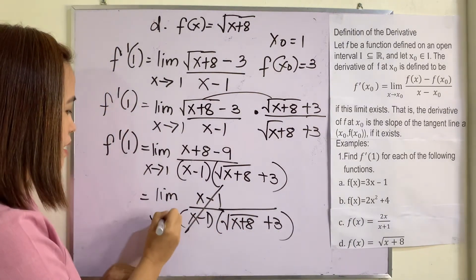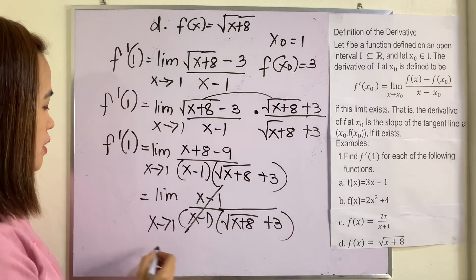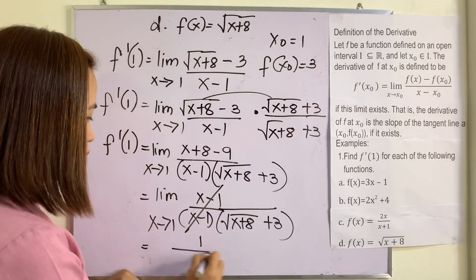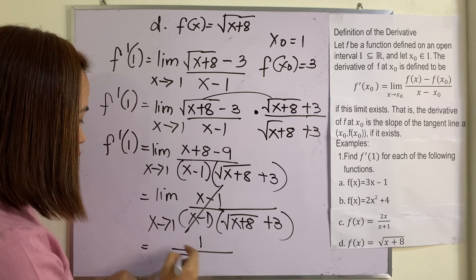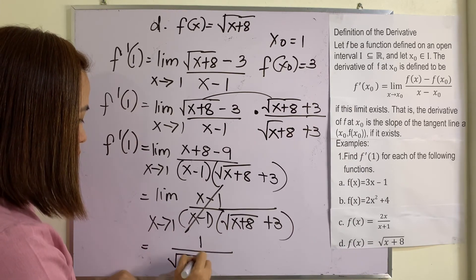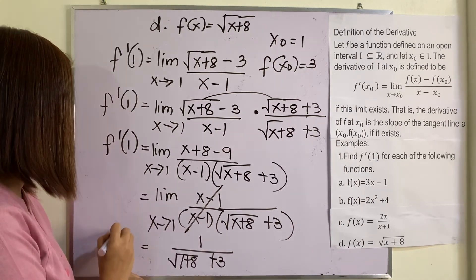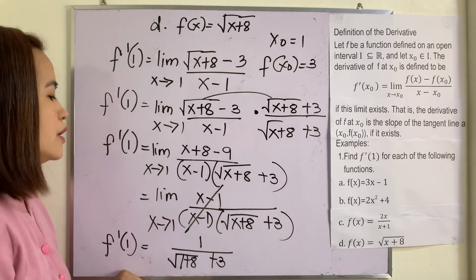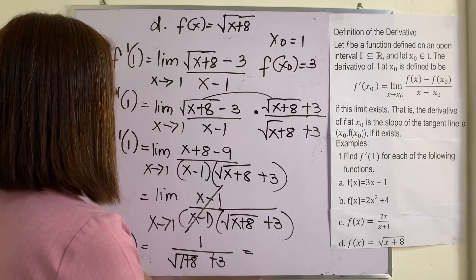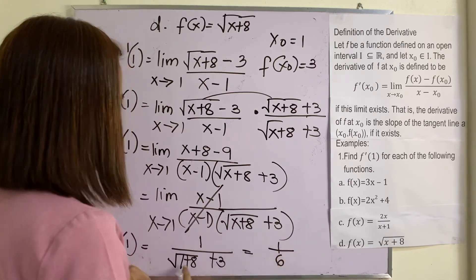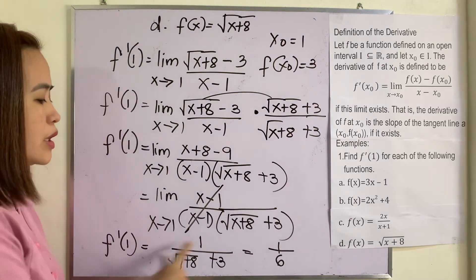The (x minus one) terms cancel. Substituting x equals one: one over the square root of one plus eight plus three. The square root of nine is three, so the denominator is three plus three equals six. Therefore f prime of one is equal to one over six.